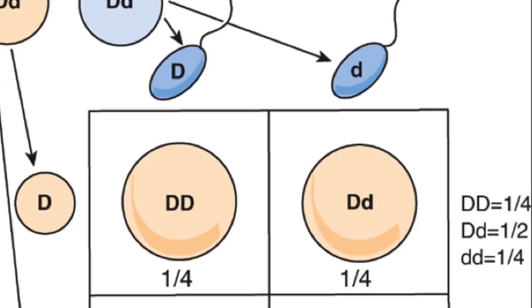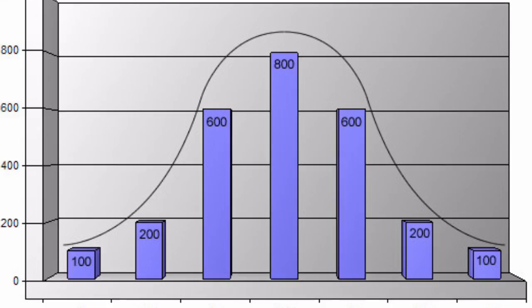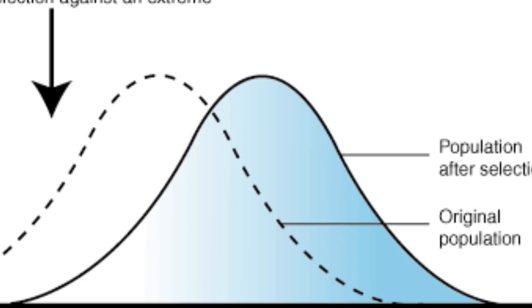Single gene traits are traits controlled by one gene that has two alleles. What determines the number of phenotypes for a given trait? The number of phenotypes produced for a trait depends on how many genes control the trait. Polygenic traits are traits controlled by two or more genes.